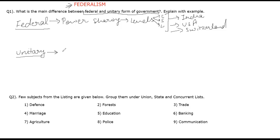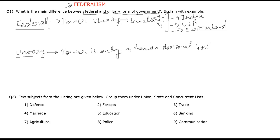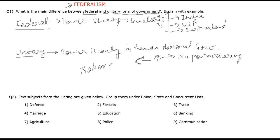Then we come to another thing: what is a unitary government? Unitary means the power is only in the hands of the national government, or we can say the central government. There is no power sharing. Every decision in the country is made by the central government. The national government has the highest authority.